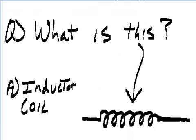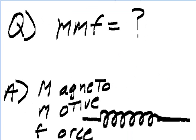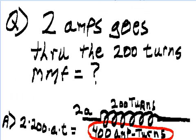What is this? Answer: inductor coil. MMF equals what? Magnetomotive force. 2 amps goes through the 200 turns. Magnetomotive force equals what? Answer: 2 times 200 amps times turns equals 400 amp-turns.